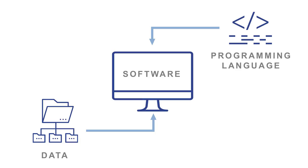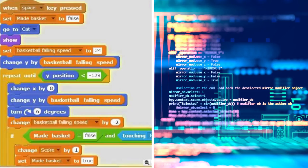Let's define data, software, and programming language. Data is information — credit card numbers, voices, images of eyes. Software uses data to do things like perform online retail services, make medical diagnoses, and identify people. Developers use programming languages to create software.